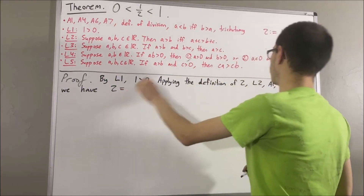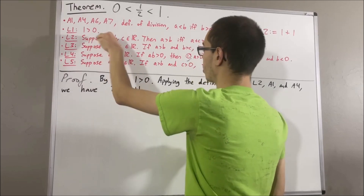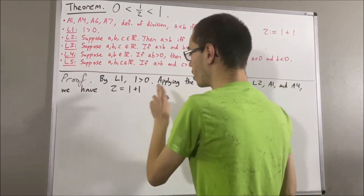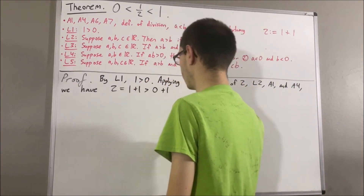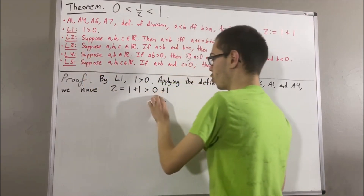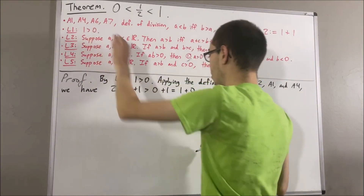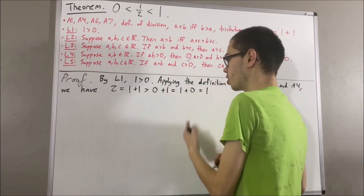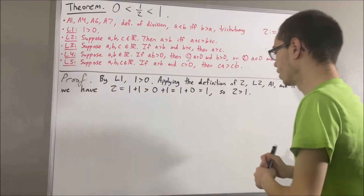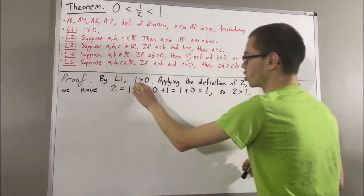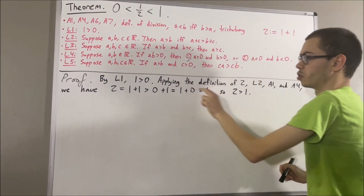By the definition of 2, we know that 2 is equal to 1 plus 1. Since 1 is greater than 0, according to L2 we can add 1 on both sides of this inequality, so we get 1 plus 1 is greater than 0 plus 1. By axiom 1, 0 plus 1 is equal to 1 plus 0, and by axiom 4, 1 plus 0 is equal to 1. So this tells us that 2 is greater than 1. Since 2 is greater than 1 and 1 is greater than 0, by L3 that tells us 2 is greater than 0.